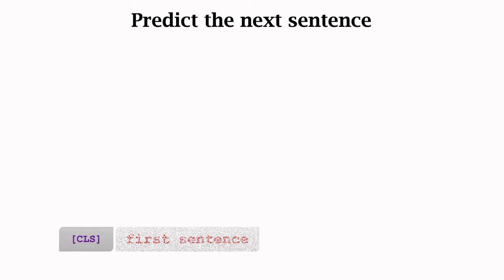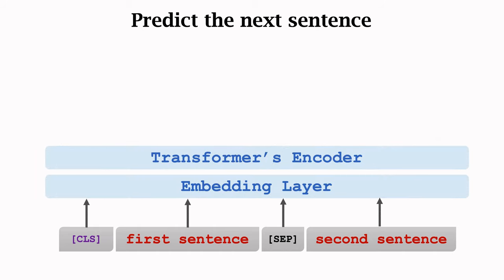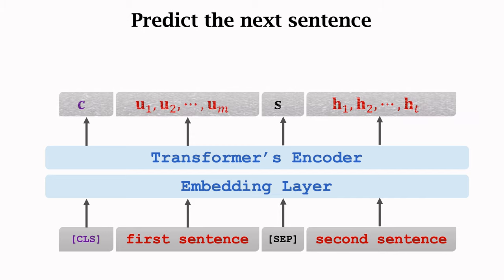This is the input sequence. It contains two sentences. They are separated by the SEP token. The first token CLS means classification. I will soon explain how it is used. The input sequence is fed into an embedding layer, and then the transformer's encoder network.